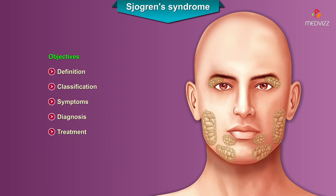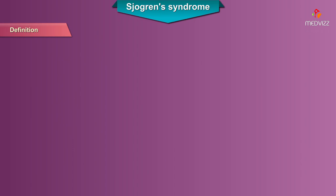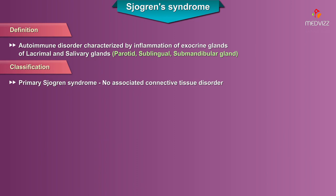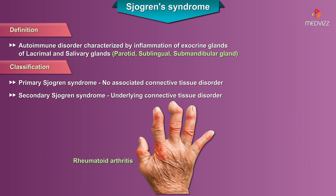In this video, you'll be able to learn about Sjogren's syndrome. Sjogren's syndrome is an autoimmune disorder characterized by inflammation of the exocrine glands, of which the lacrimal and salivary glands are the most commonly affected. It is classified as primary if there is no associated connective tissue disorder, and secondary if there is an underlying connective tissue disorder.